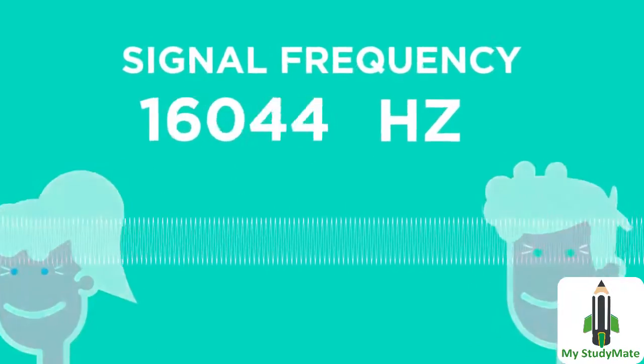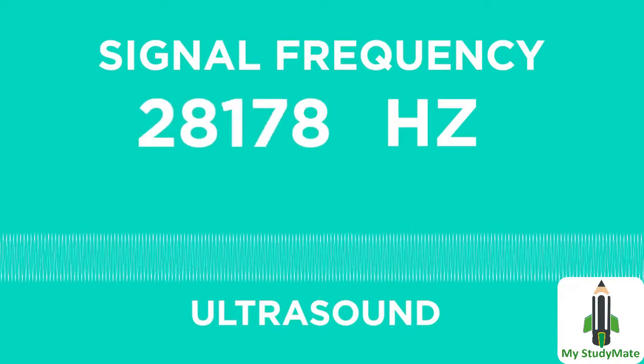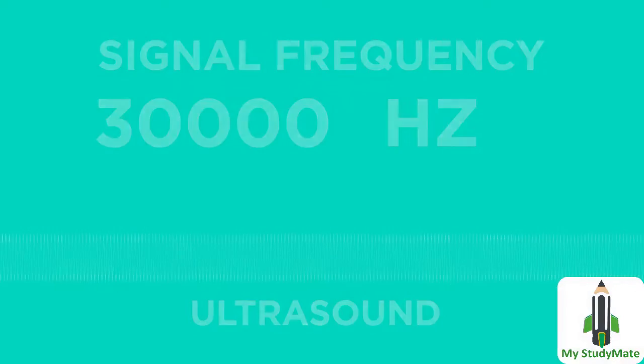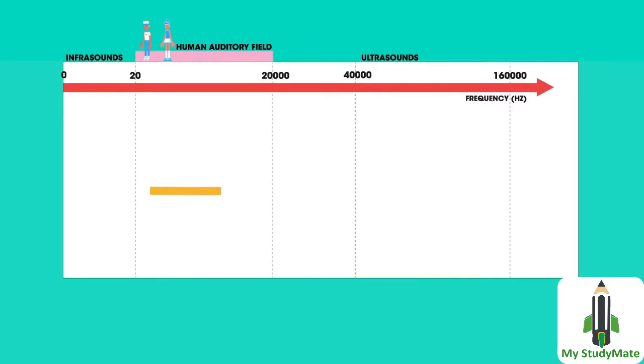Any frequency that is below human range is known as infrasound, and any frequency that is higher is known as ultrasound. Animals can hear a different range of frequencies than humans. Dogs can hear between 67 hertz and 45,000 hertz.